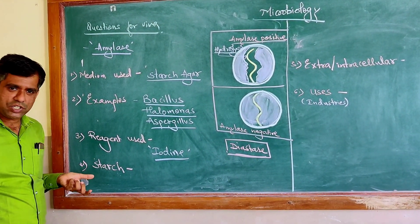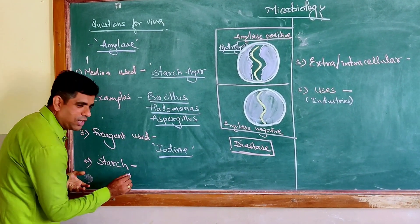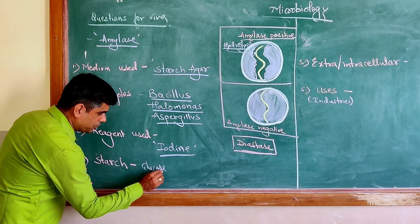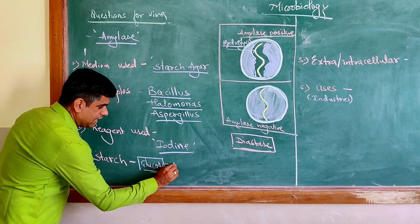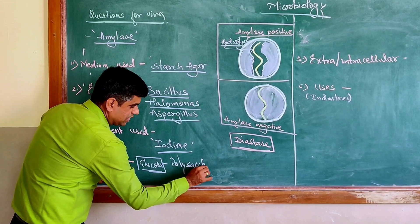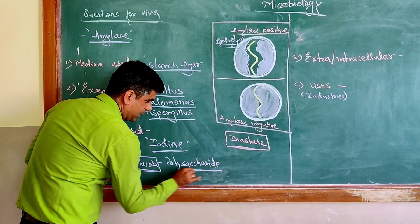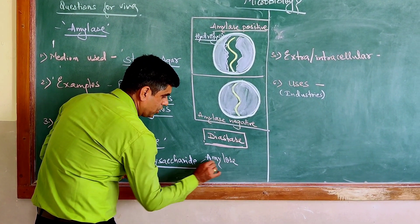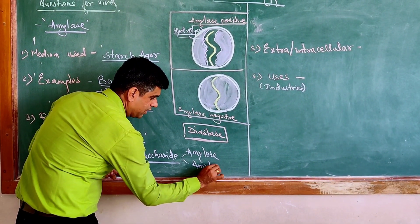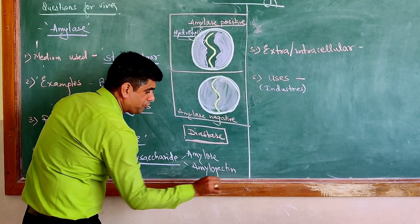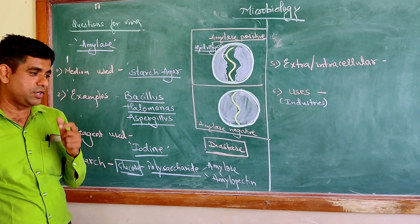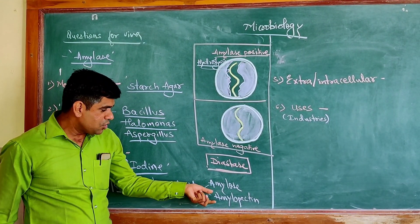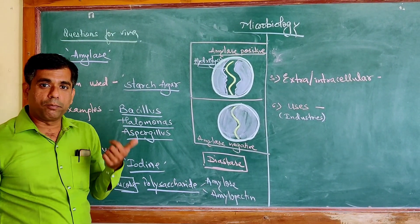Some people may ask you what is starch. Starch is a homopolymer of glucose. It is a glucose polymer, a polysaccharide which is generally made of two units: amylose and amylopectin. Wherever you find only alpha 1,4 linkages between the glucose units, it is the amylose, and where you have 1,4 and 1,6 branch points there, you have this particular amylopectin.